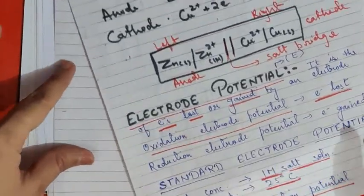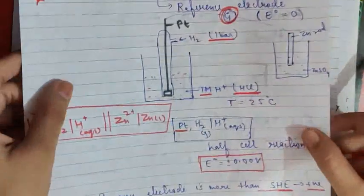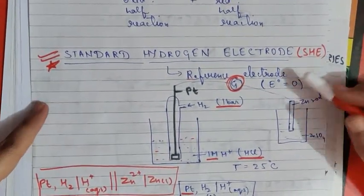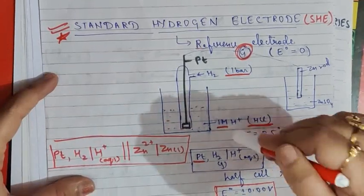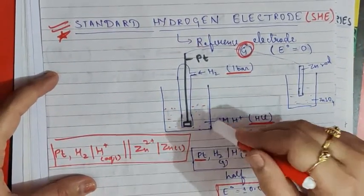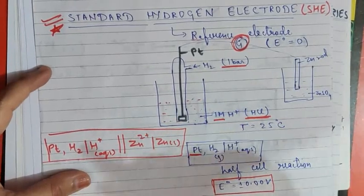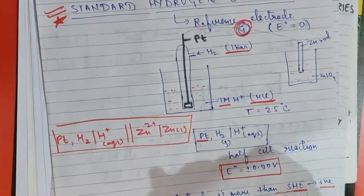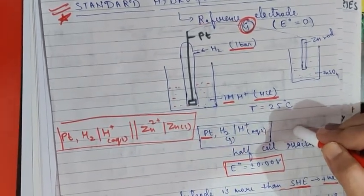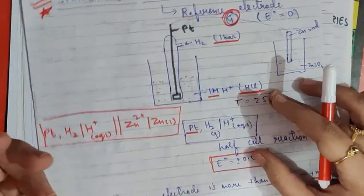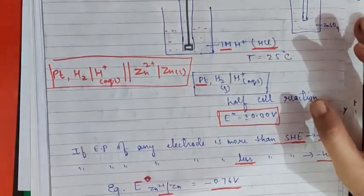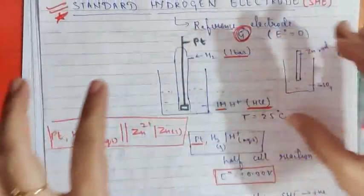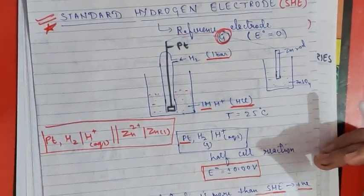If a gas is involved, the pressure should be one bar. Apart from this, we studied about the Standard Hydrogen Electrode, that is SHE. The significance of the SHE is that it is used to calculate the standard electrode potential of any unknown electrode by connecting that unknown electrode with the SHE. I explained how this works in my last lecture.